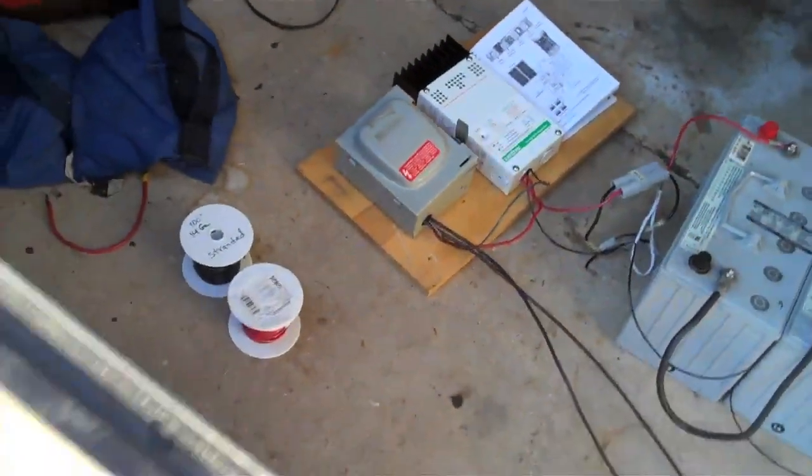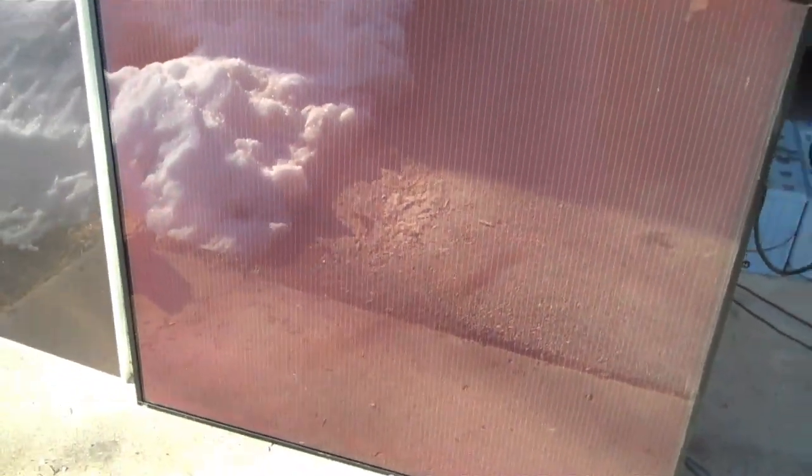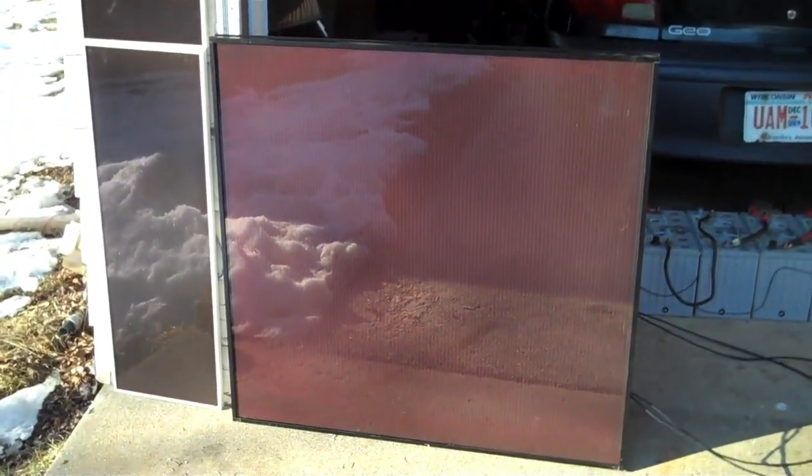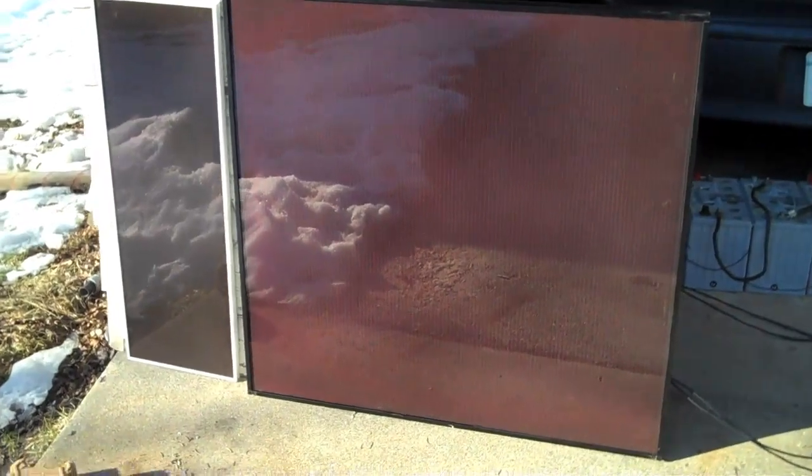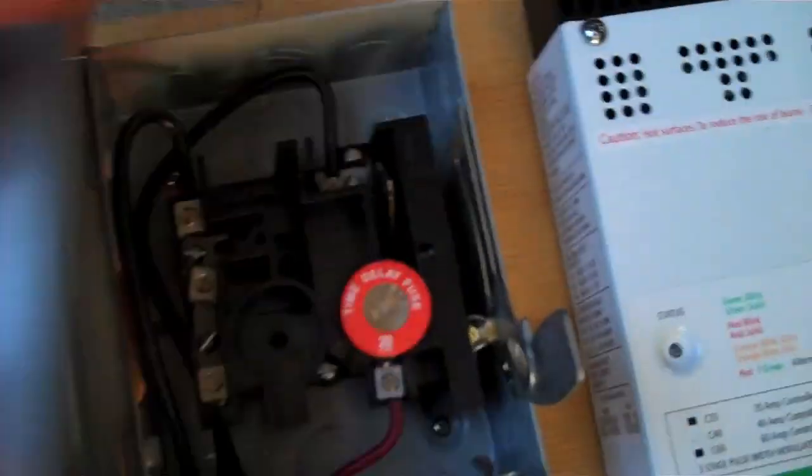And then if we come around to the sunny side here, here is my Konica 60 watt panel. It's 67 volts, 0.9 amps, and the output of the panel right here comes down the back, down these two black wires, and that goes into the disconnect.